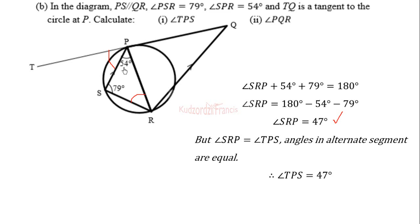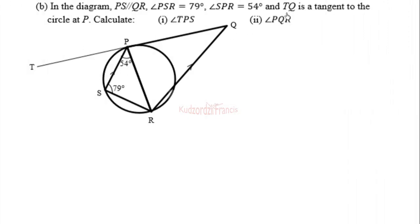Now let's look at part II — we are calculating angle PQR. Angle PQR is this angle here, and we know it lies in a quadrilateral with four angles.